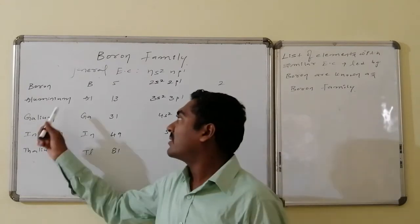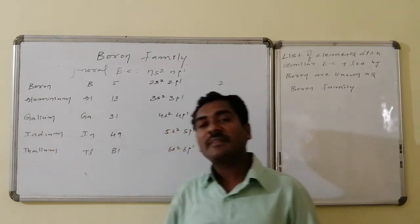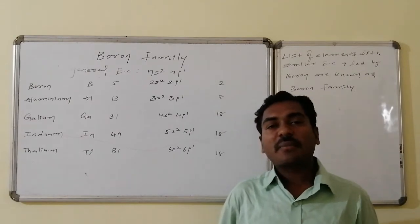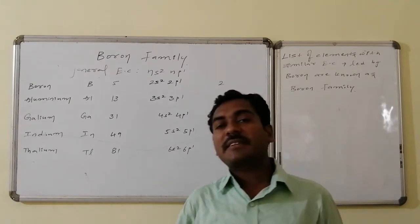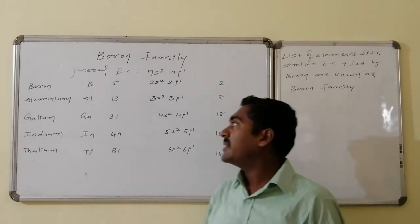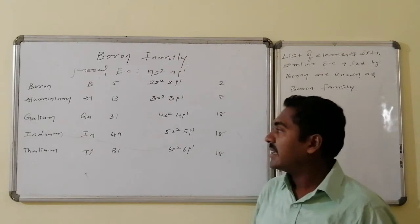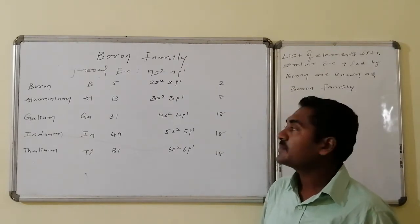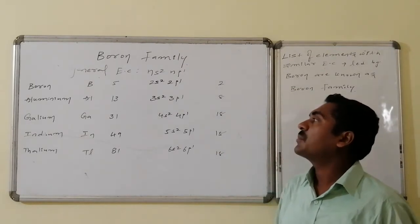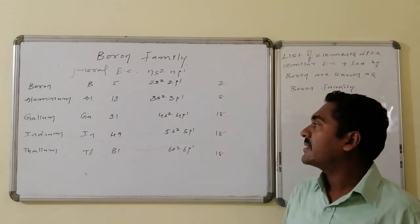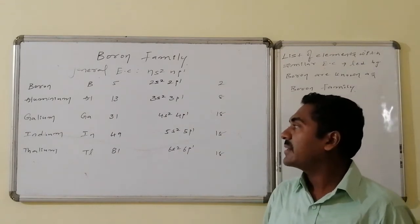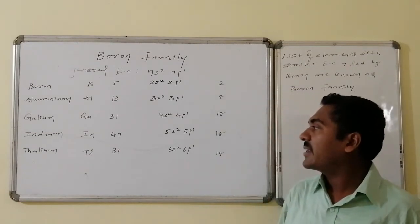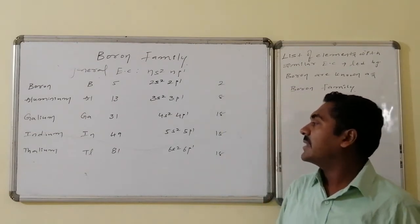The elements of this family are Boron, Aluminium, Gallium, Indium, and Thallium. Their symbolic representations are: Boron B, Aluminium Al, Gallium Ga, Indium In, and Thallium Tl. The atomic numbers are: Boron 5, Aluminium 13, Gallium 31, Indium 49, and Thallium 81.